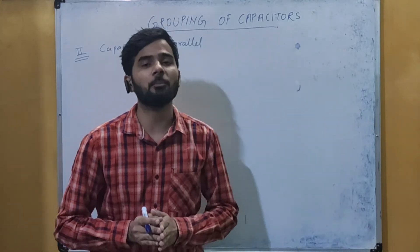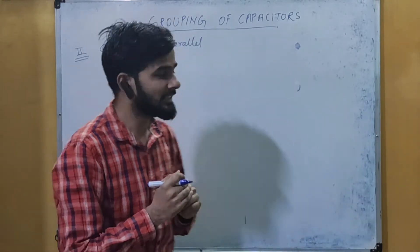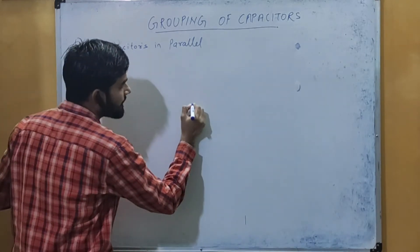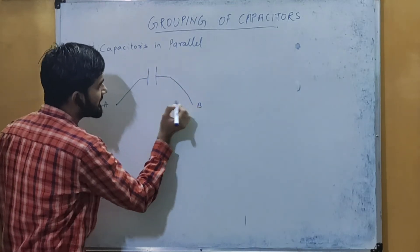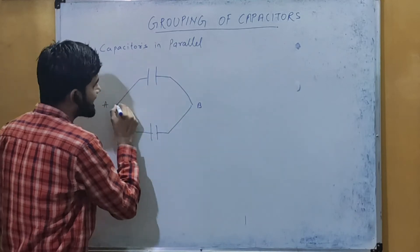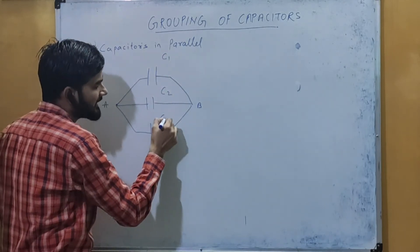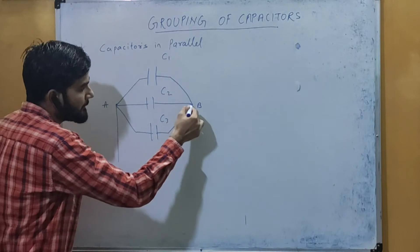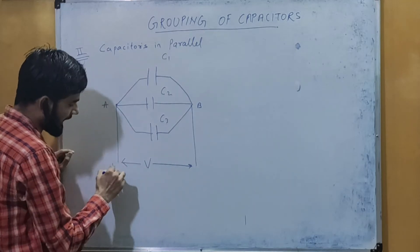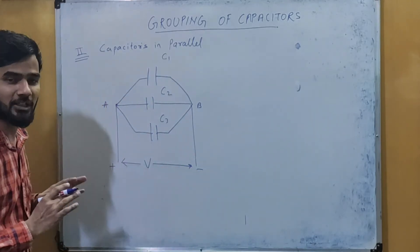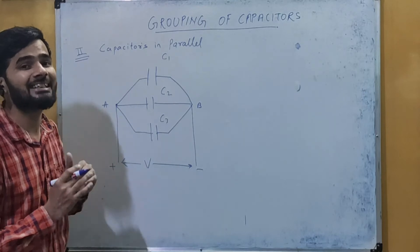In the parallel combination, a number of capacitors are connected across two common points. If we have point A and point B, then across these two points a number of capacitors are connected — all such capacitors are said to be in parallel. Suppose their capacitances are C1, C2, and C3, and across A-B we connect a battery of potential V with positive and negative terminals.